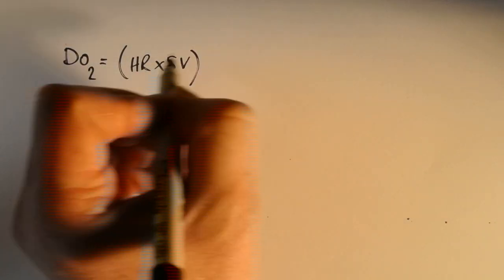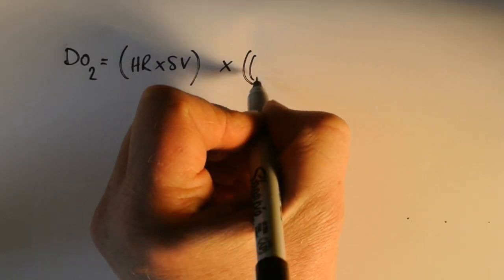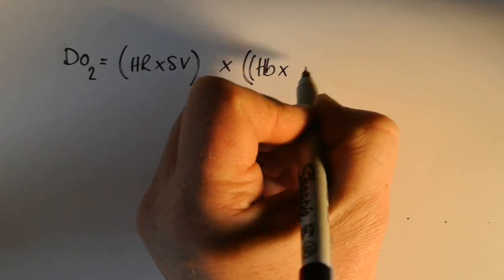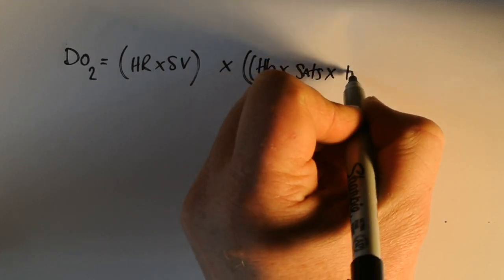If we look at cardiac output, that's your heart rate times your stroke volume. And we're also going to look at your oxygen content, so your hemoglobin times by your saturations times by your Hüfner's constant.